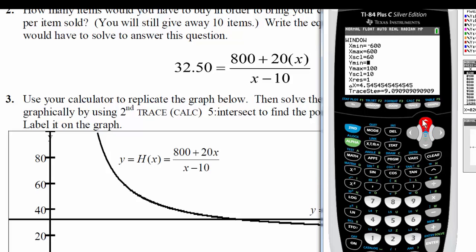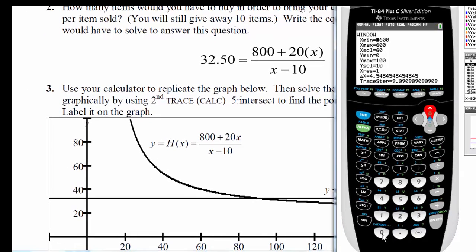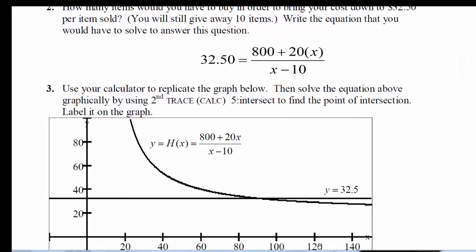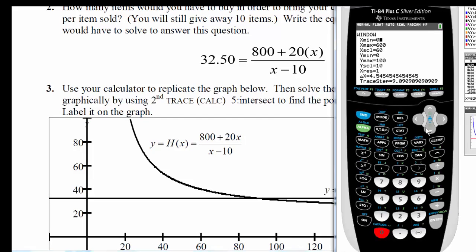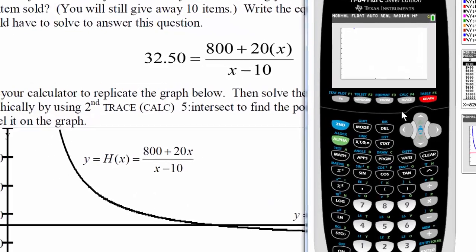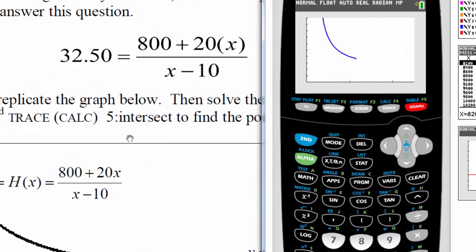And for the x min and x max, I'll start at zero. And if you look at their table here, it looks like they're going from zero to say 140, 150. So I'll go from zero to say 150. Now I press graph. And it looks like I'm reproducing their graph.